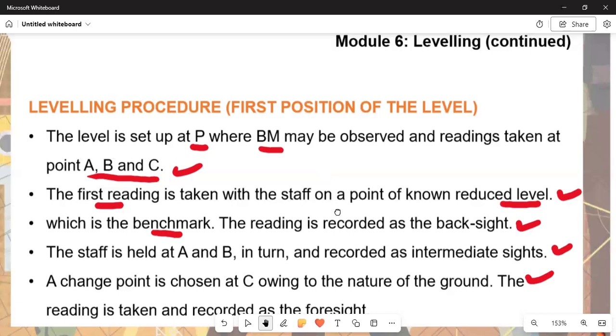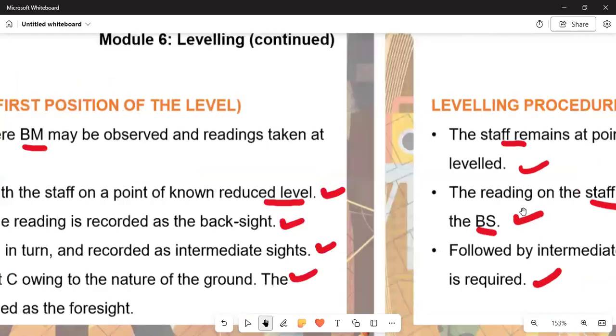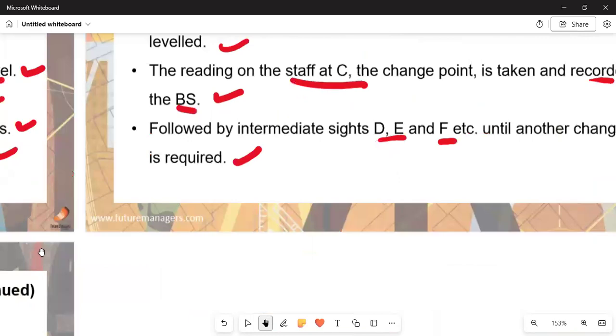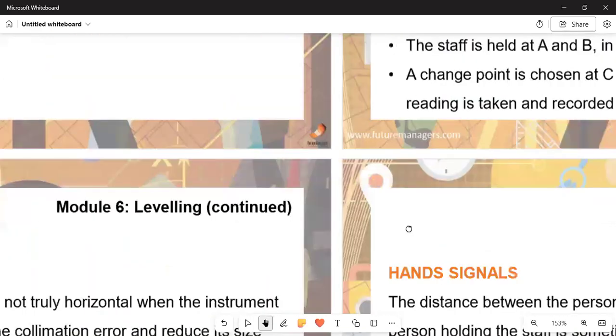For the leveling procedure on the second position of the level, we've got to understand that the staff remains at point C at the highest peak. You could see that on pictures on the next module—tune with us, that's why I'm saying subscribe now. The level is moved to Q, set up and leveled. The reading on the staff at C, the change point, is taken and is recorded as a back sight. The following intermediate sights D, E, and F are used at the change point as required.